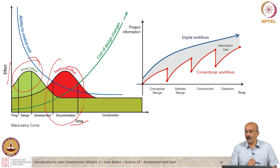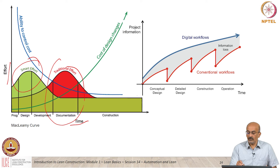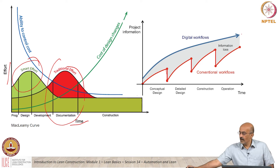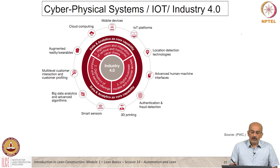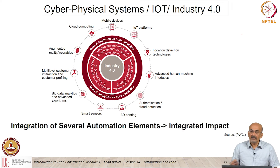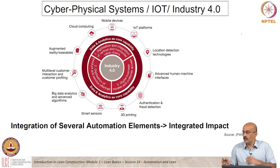Here is another graphic which is very relevant. In conventional workflows, between each phase there is an information loss. But when you use a digital workflow, the information continuously improves — there is no drop in information; as information gets added it keeps growing. This summarizes where BIM has an impact. When you go into cyber-physical systems or Industry 4.0, it is a portfolio of several technologies — many of which we have discussed. There is an integrated impact, and as an exercise you can look at these technologies and consider what the impact will be when they are integrated together in construction.